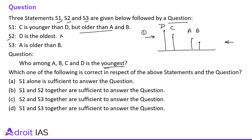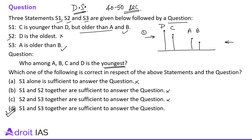The question asks: who among A, B, C, D is the youngest? Obviously B is the youngest. S1 alone is not sufficient. S1 and S2 together are not sufficient. S2 and S3 together are not sufficient. S1 and S3 together are sufficient to answer this question.